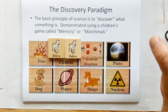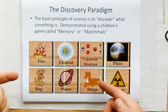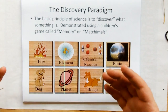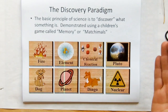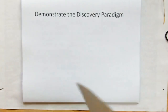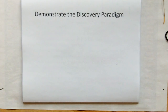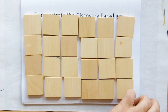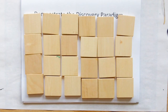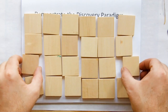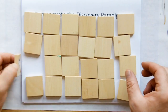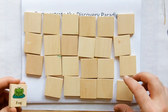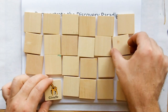We'll be using the matchimals to represent scientific discoveries. Is the Australian dingo really a dog? Well, there's evidence to suggest this species evolved on its own. Is Pluto a planet? So let me demonstrate the discovery paradigm using the matchimals. The way this works is — believing we have access to all the pieces — we keep turning them over until we find ones that match. In the beginning, when we don't know much, it takes a long time before matches are found.